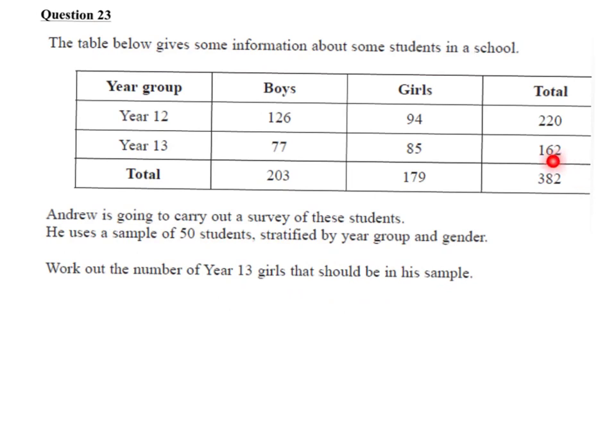We know that there are 382 students in the school, but we have to get our sample down to 50 students. So we need to get the correct proportion of year 13 girls — we need to work out the proportion in the sample relative to the population itself.